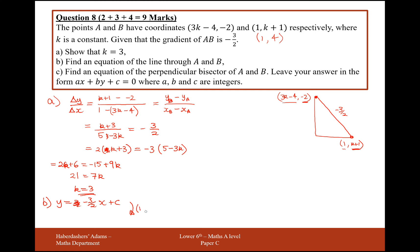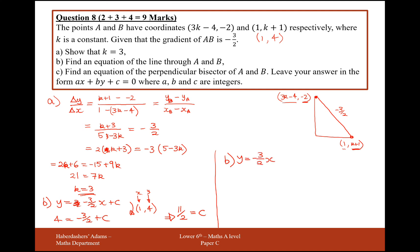Plugging in the coordinate (1, 4): 1 is the x-coordinate and 4 is the y-coordinate. So we get 4 = -3/2 × 1 + c. Adding 3/2 to the other side gives c = 5 and a half, or 11 over 2. So the equation of the straight line is y = -3/2 x + 11/2.